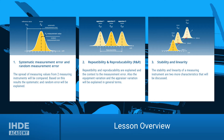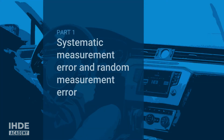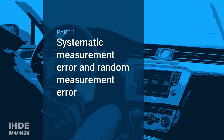This lesson is divided into three chapters. In the first chapter we look at what a systematic and a random measurement error is. The terms repeatability and reproducibility will be explained in the second chapter. The last chapter is about the stability and linearity of measuring instruments. Let's start with the systematic and random measurement errors.